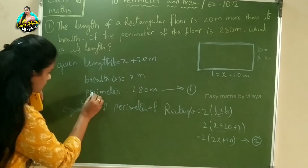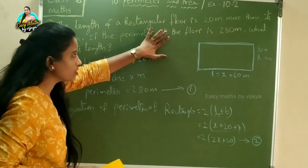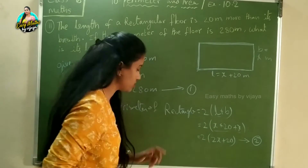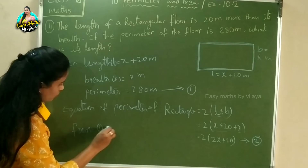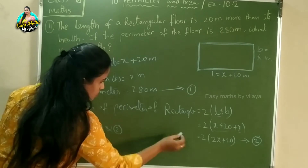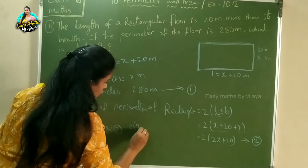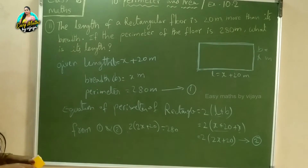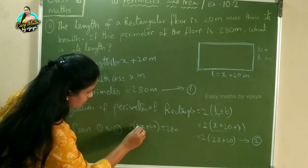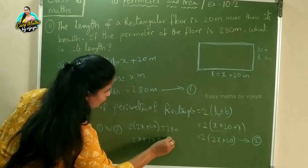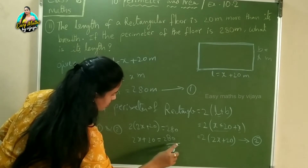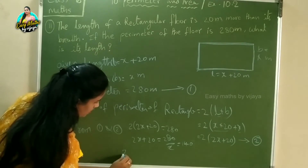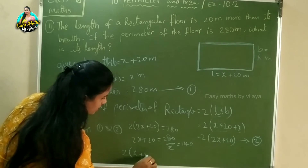From equations 1 and 2, we equate them: 2 into (2x + 20) = 280. Dividing both sides by 2: 2x + 20 = 140. Now take 2 as a common factor: 2(x + 10) = 140.